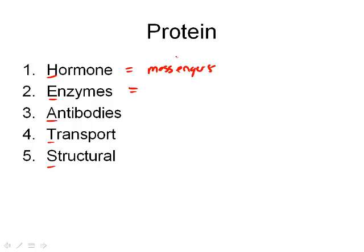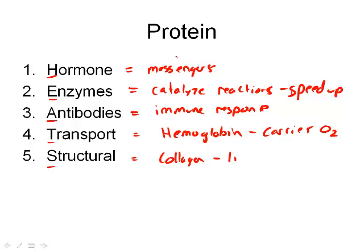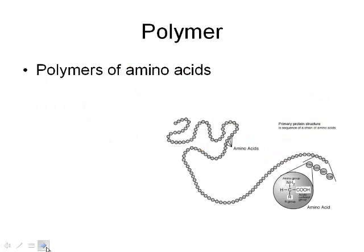Enzymes are proteins that catalyze a reaction, which means they speed it up. Antibodies are involved in the immune response. Transport means they carry things — for example, hemoglobin carries oxygen. And then structural proteins, like collagen, which is found in lips — collagen is a protein. So we need to know this structure: HEATS.